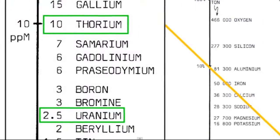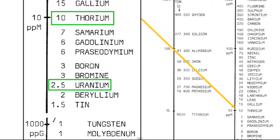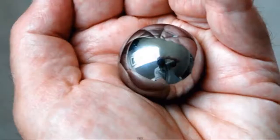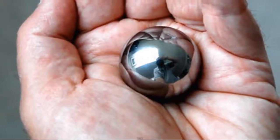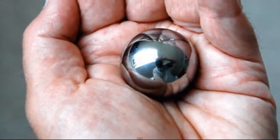Thorium is a naturally occurring nuclear fuel that is four times more common in the earth's crust than uranium. It's so energy dense that you can hold a lifetime supply of thorium energy in the palm of your hand. We could use thorium about 200 times more efficiently than we're using uranium now.